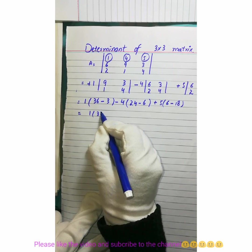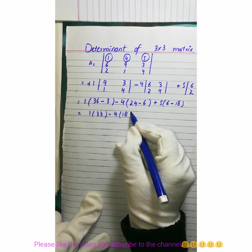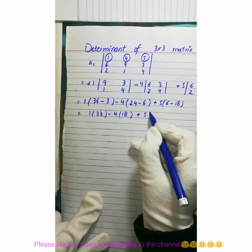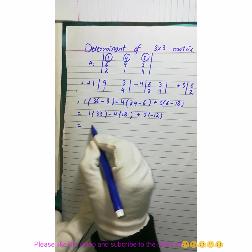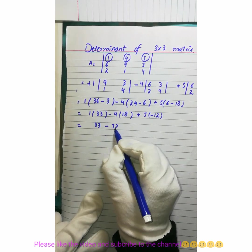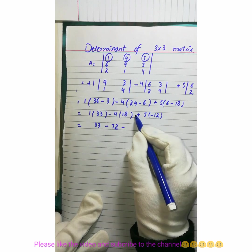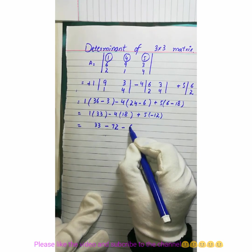1 into 33 minus 4 into 18 plus 5 into minus 12. 33 minus 18... 4 times 72 minus... plus minus minus 5, 12... 5 times 12 is 60.